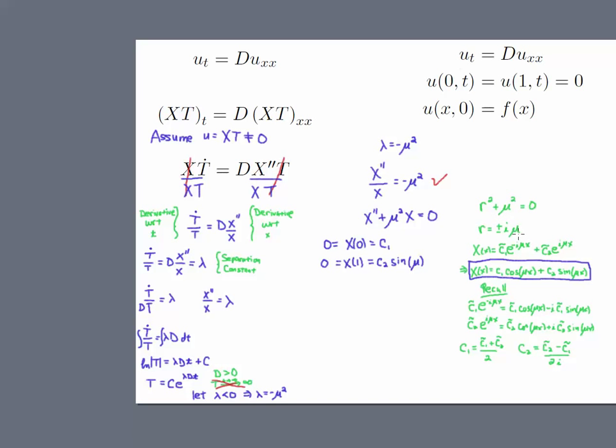You know how to solve that ODE. You can use the characteristic equation and you get r equals plus or minus i mu, and then you get these complex exponentials. But you can write that as a sum of cosine plus sine.